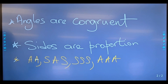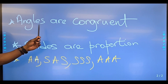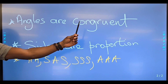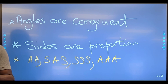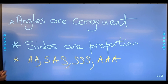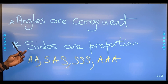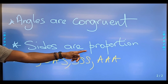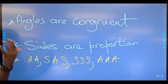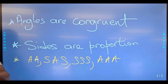The foundation for similar triangles is as follows. All the angles are congruent — all the angles from one triangle equal the angles from the other triangle. Secondly, corresponding sides are proportional, meaning corresponding sides must share that same ratio.